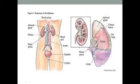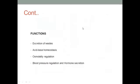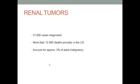You can see the cortex and the medulla — the two layers of the kidney — followed by the pelvis. The main functions of the kidney include waste excretion, acid-base balance, osmolality control, blood pressure regulation, and hormone secretion such as erythropoietin.